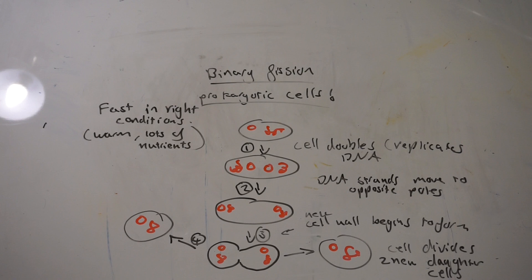And then, as you can see in step four, this eventually results in two daughter cells being produced. Each daughter cell now has one copy of circular DNA, the main DNA of a prokaryote.